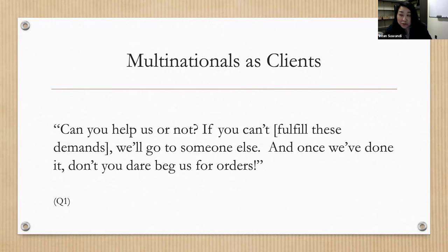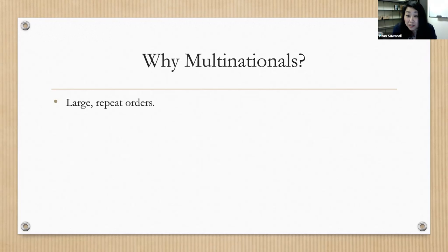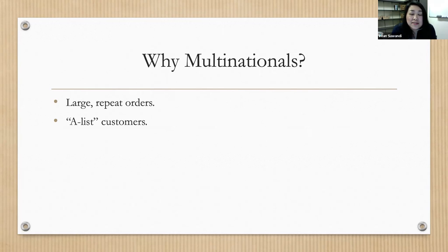Why do global south suppliers still work with multinationals even though they told me they prefer local customers because profits are bigger? One key reason is that multinationals give them large repeat orders, providing some stability. But also something mentioned frequently is that multinationals give them a brand — having A-list multinational customers makes their business more well-known. For example, their creditors say, 'We cannot compare you with your competitors because of your customer profile.' If they supply to multinationals, they can use it as brand equity and as a referral.